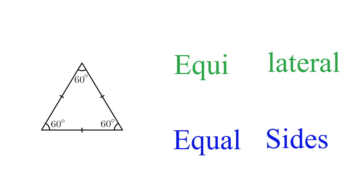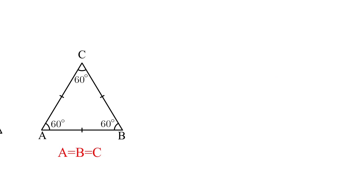The result of all three sides being equal is that each angle in an equilateral triangle is the same. An equilateral triangle has three angles of 60 degrees each. You can even experiment with this — if you take three pieces of the same length, put them together in the form of a triangle, you'll find that each angle A, B, and C will be exactly 60 degrees.